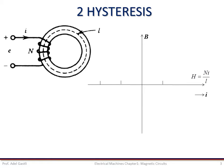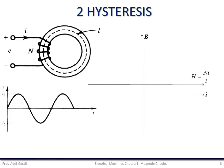Consider the following coil-core assembly, where the excitation current is sinusoidal. Assume that at time 0, the core is initially unmagnetized, so the starting point is the origin point 0.